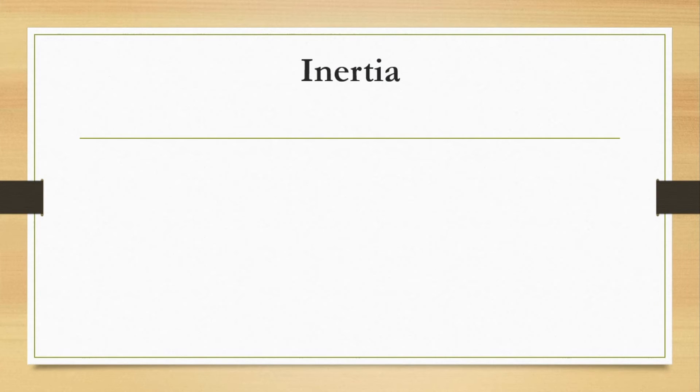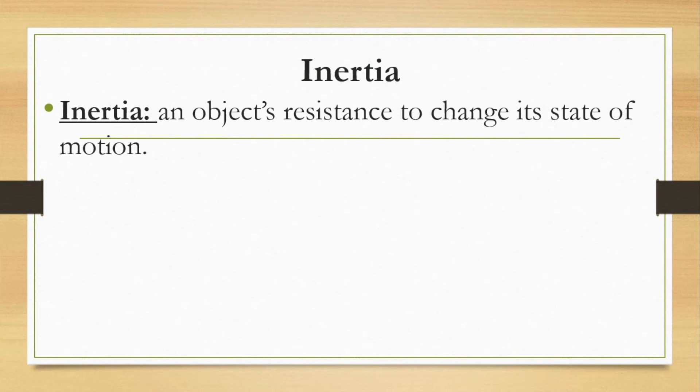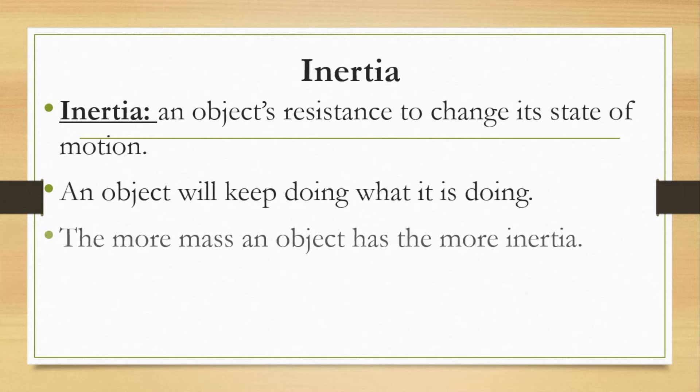Now we're going to talk about inertia. Inertia is an object's resistance to the change in its state of motion. So what we mean by that is that an object is going to keep doing whatever it's doing. That might be moving, so an object in motion will stay in motion. Or that might mean being at rest. So an object at rest will stay at rest. The more mass an object has, the more inertia it's going to have. So in other words, the heavier an object is, the harder it's going to be to change its state of motion.